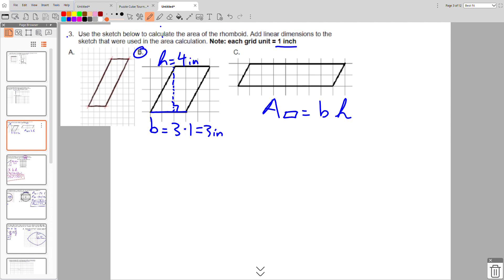So the area of my rhombus is equal to three inches times four inches for the height. So the area of my rhombus is equal to twelve square inches. Box your answer.